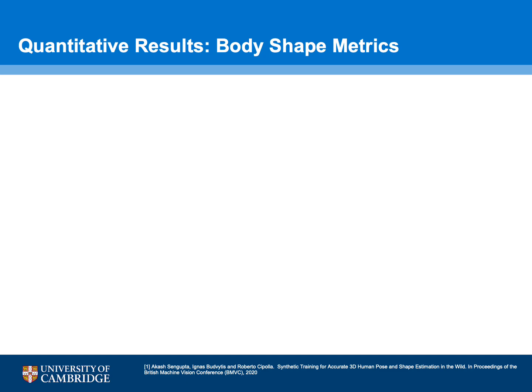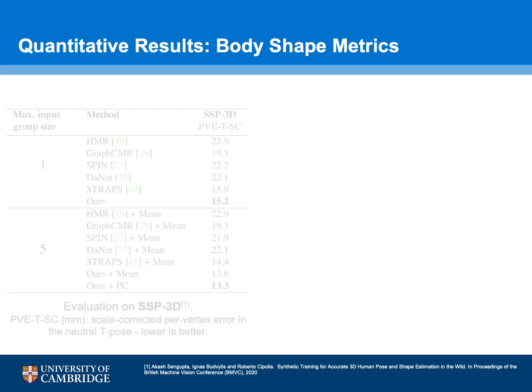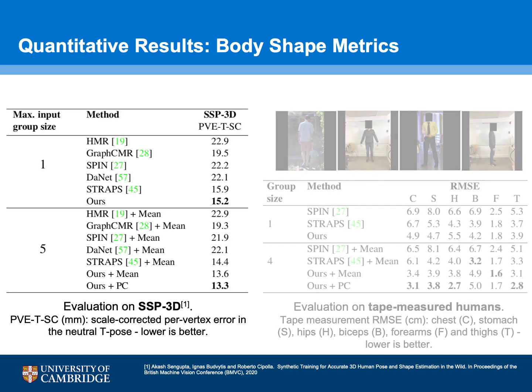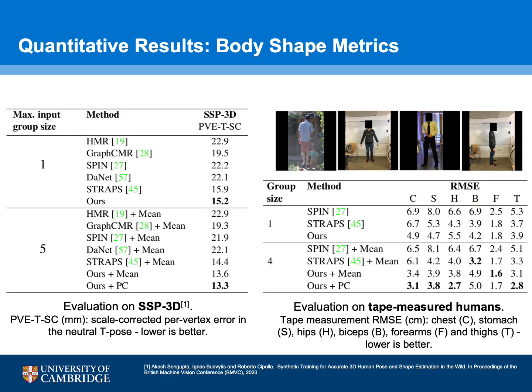We evaluate our method on the SSP3D dataset as well as a private dataset of tape-measured humans. Our probabilistic combination approach gives lower body shape errors than current single-image approaches, and also outperforms naive averaging of outputs from those approaches, demonstrating the benefits of uncertainty-weighted averaging.